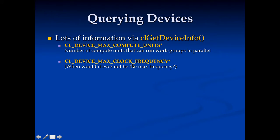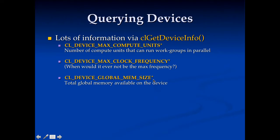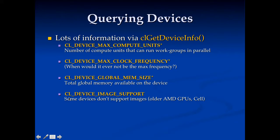You can call CL device max clock frequency, and it'll tell you the maximum frequency a device will run at — which begs the question, when would the device ever not be at the maximum frequency? You can call CL device global memory size to find out the global memory available on the device. You can also call CL device image support to check whether the OpenCL device supports images. Some older AMD GPUs didn't support images, FPGAs won't support images, and some early CPU implementations did not support images either.